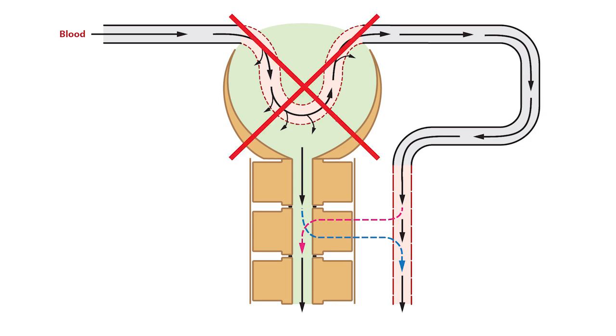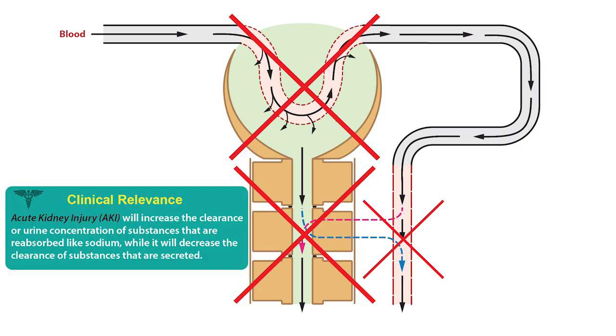or peritubular capillaries will affect the kidneys' ability to form urine. For example, acute kidney disease will increase the urinary concentration of substances that are reabsorbed, like sodium, while it will decrease the urinary concentration of substances that are secreted.